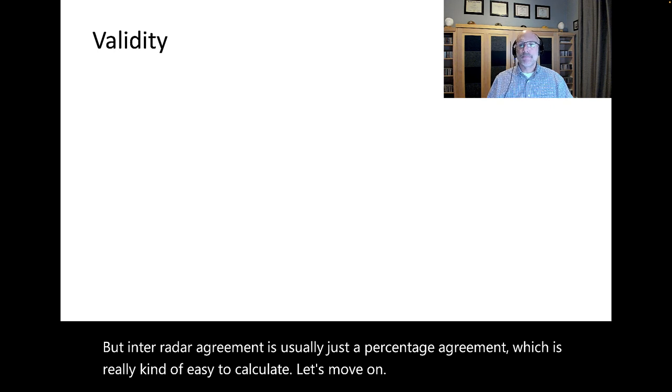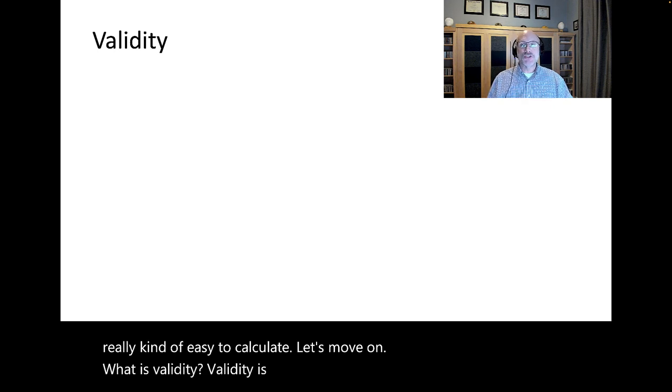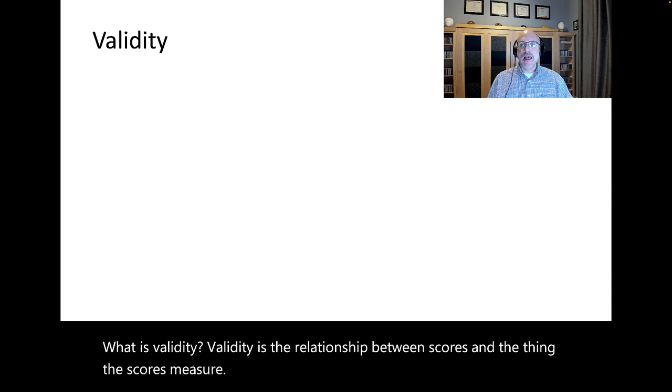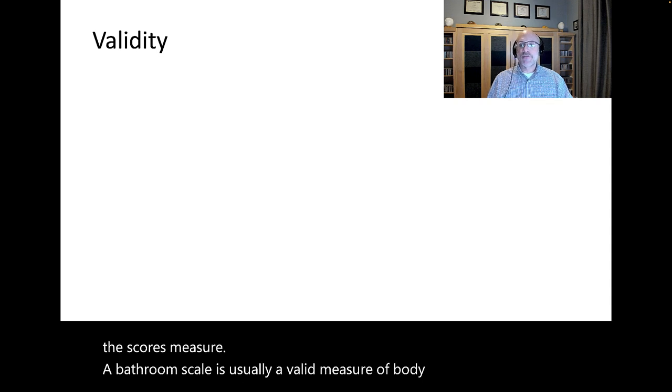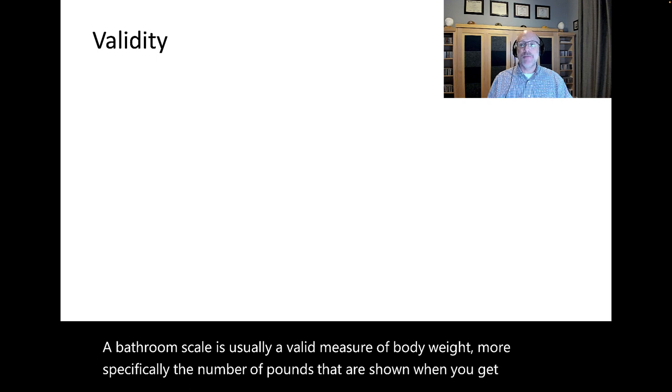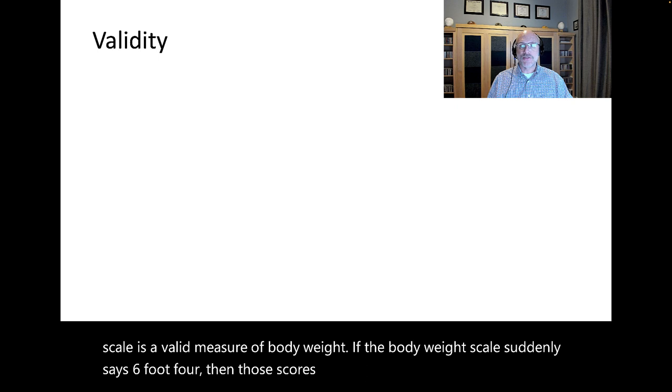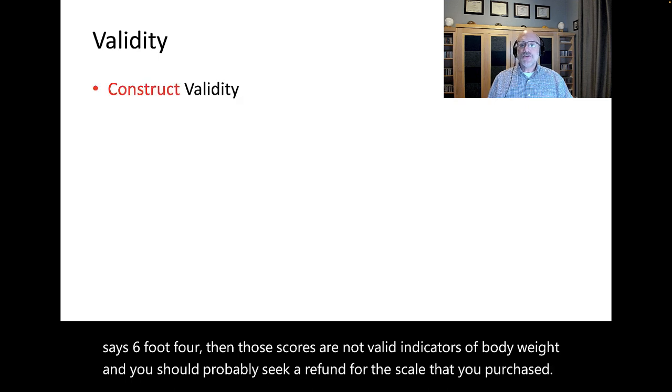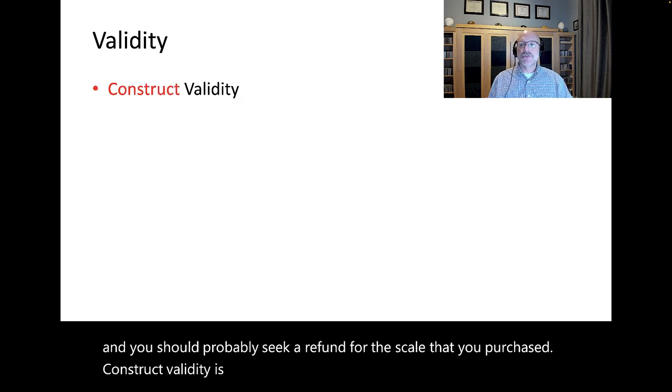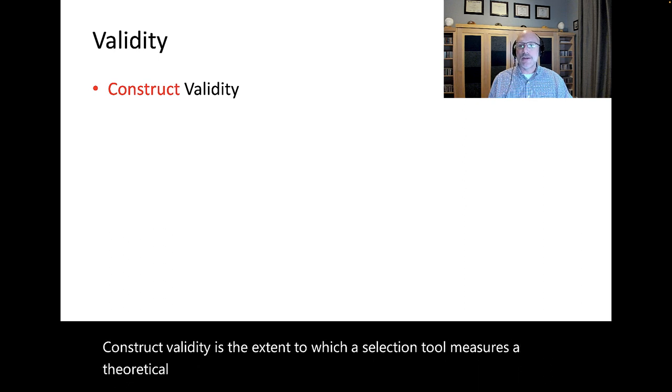What is validity? Validity is the relationship between scores and the thing the scores measure. A bathroom scale is usually a valid measure of body weight. More specifically, the number of pounds that are shown when you get on the scale is a valid measure of body weight. Construct validity is the extent to which a selection tool measures a theoretical construct or a trait. One can think of construct validity as the overarching or encompassing form of validity.